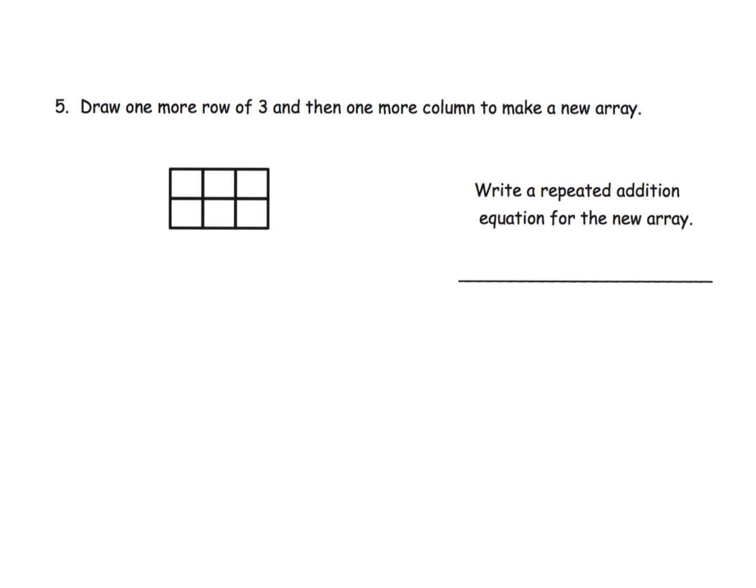Just one last example. It says for students to draw one more row of three and then one more column to make a brand new array. This is where students get practice moving towards that abstract where they have to start drawing their own. One more row of three, that's what I'm going to do. Your students are very likely to do individual squares. There's an individual square, and then use two lines to make another square and two lines to make another square. That's really what we're hoping our second graders will be doing.